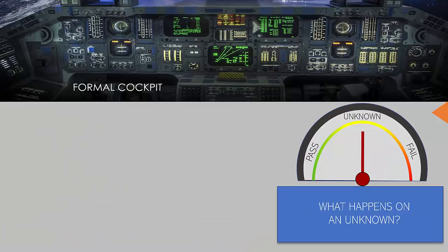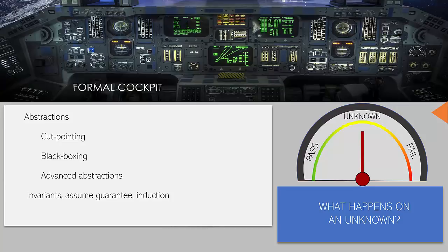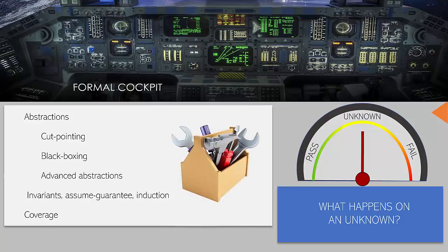But what happens on an unknown? One of the many reasons why formal verification has had a checkered history of adoption is people don't know how to cope with unknowns. We need to work a little harder. So we employ abstractions - they could take the form of cut-pointing, black-boxing, or even more advanced abstractions. We may need to use invariants, assume-guarantee flows, induction methods. We may need to employ coverage techniques to understand the scope of what is being verified and why it hasn't converged with respect to the design. Effectively, you need the whole cockpit and the whole cockpit of tools.